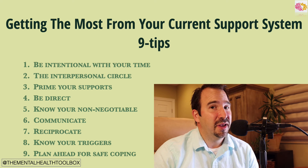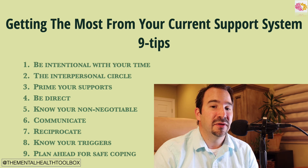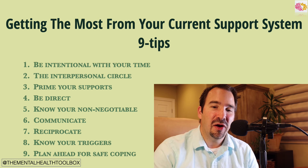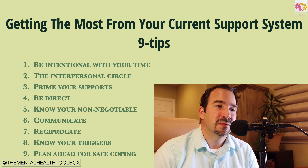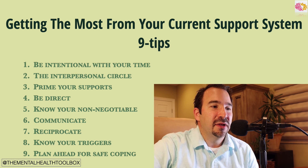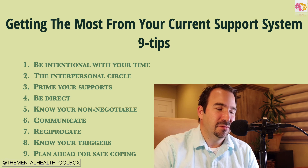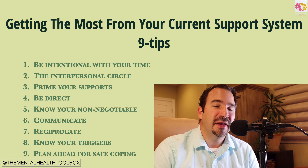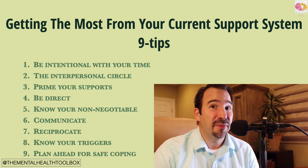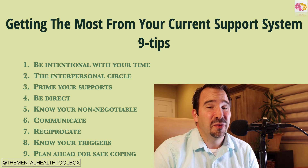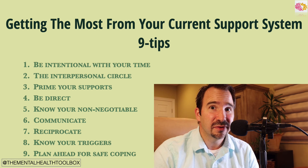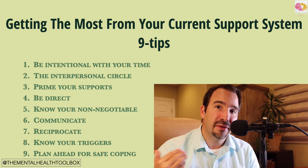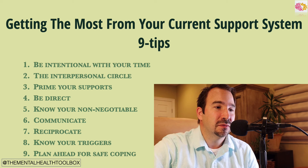The eighth point is to know your triggers — know what sets you off and try to anticipate ways to mitigate those. If you know where the mines are, it's easier to work your way around them in social situations. The ninth point is to plan ahead for safe coping — know what works. When working with clients, I often have them fill out mood scales to find out what's working and what's not. When you're having a crappy day, how did you cope? When you're having a good day, how did you cope? We don't always connect the dots, so plan for safe coping — but in order to do that, you have to know what works.